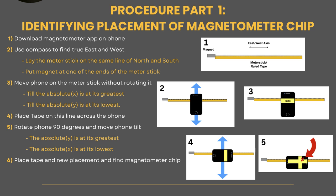Then we rotate the phone 90 degrees and we do the exact same thing, only setting the absolute y at its greatest and absolute x at its lowest. Then we mark a piece of tape and X marks the spot. That's where the magnetometer chip is located in your phone.